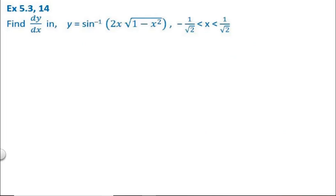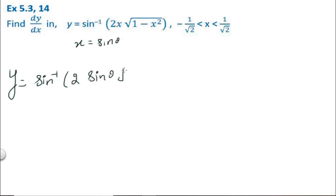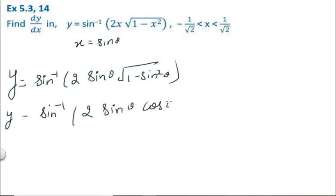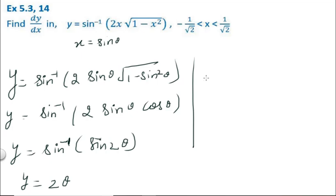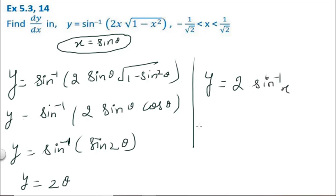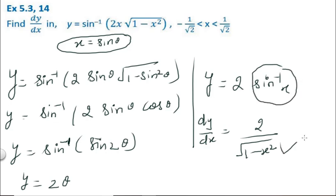Question 14 also uses trig substitution. y = sin⁻¹(2x√(1 − x²)). Let x = sin θ. Then the expression becomes sin⁻¹(2 sin θ √(1 − sin²θ)) = sin⁻¹(2 sin θ cos θ) = sin⁻¹(sin 2θ) = 2θ. Since θ = sin⁻¹x, we get y = 2 sin⁻¹x, and dy/dx = 2 · 1/√(1 − x²).